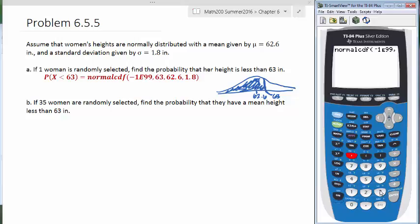Our maximum, or our upper limit, is 63. Our mean is 62.6. And our standard deviation is 1.8.